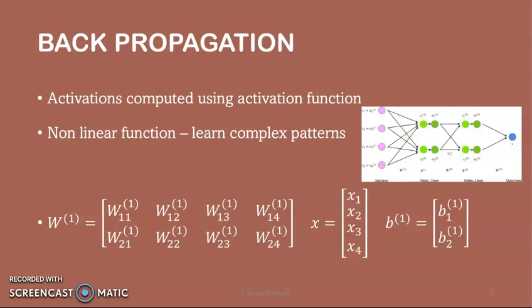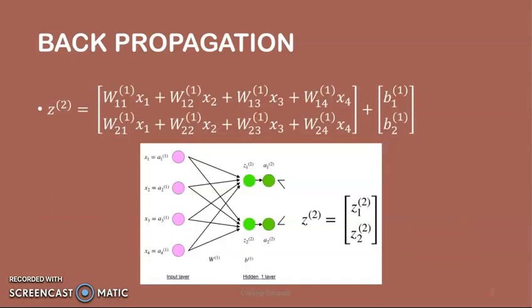X is the input vector of shape M×1, where M is the number of input neurons, which is 4. We also have a bias of shape N×1, where N is the number of neurons in the current layer, which is 2. Now we need to calculate the equation for weighted input of layer 2. We see that this value is obtained by multiplying the weight matrix by the input and adding the bias to it.